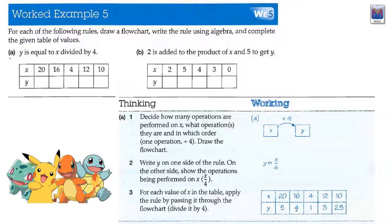If we look at a here, y is equal to x divided by 4. So, our flow chart is like this thing here. We start with x, we divide by 4 and it equals y. How do we write that algebraically? y equals x over 4.